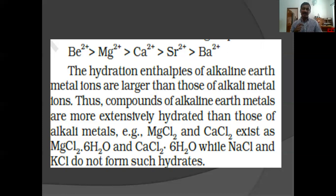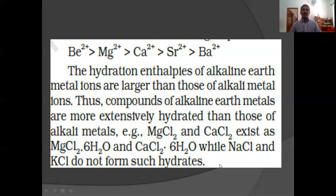The hydration enthalpy of alkaline earth metal ions are larger than those of alkaline metal ions — that is the reason. For example, magnesium chloride exists as MgCl2·6H2O and calcium chloride exists as CaCl2·6H2O. But in the case of alkaline metals, NaCl and KCl have no hydrates. Lithium chloride is an exceptional case.